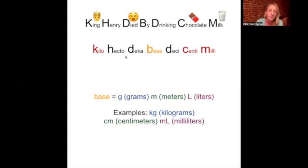So after you write down the KHDB DCM, then you're going to go in and write a number below each of those letters or words. So under kilo, you're going to have one, hecto, you're going to have 10, deca, a hundred, base, a thousand, desi, 10,000, centi, a hundred thousand, and milli, a million.